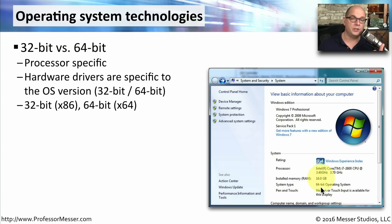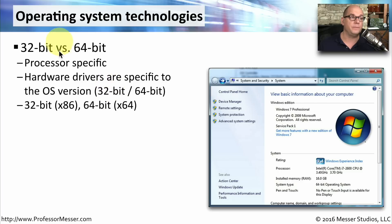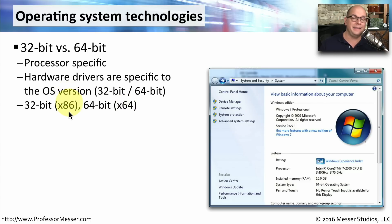The system type you're running will be especially important to the drivers you're installing. Hardware drivers will be 64-bit versions if you're running a 64-bit operating system, and 32-bit versions if you're running a 32-bit operating system. You aren't able to mix and match these — they have to match the operating system you're using. You'll sometimes see 32-bit processors described as x86, going back to the older Intel 8086. If you see a 64-bit processor, we usually describe this as x64.